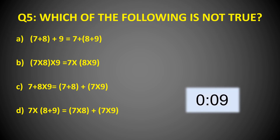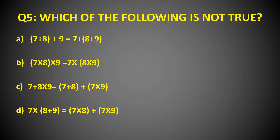Next question: Which of the following is not true? Read the statement carefully. You will get 20 seconds for that. Time's up! And the correct option is Option C. The first property was associative property under addition, the second was associative property under multiplication, and the last property was distributive property. But the option C was not any valid property.